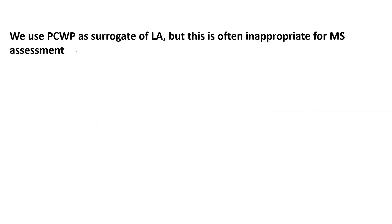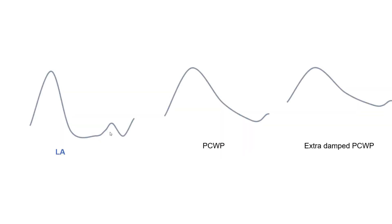The second big caveat — and the biggest one I see — is using wedge pressure as a surrogate of LA pressure. LA pressure is transmitted through the pulmonary veins and pulmonary vasculature to your wedge catheter. Through that transmission, LA pressure gets damped. The more vasoconstricted and diseased the pulmonary circuit — as in pulmonary arterial hypertension — the more damped the transmission between LA and wedge pressure.